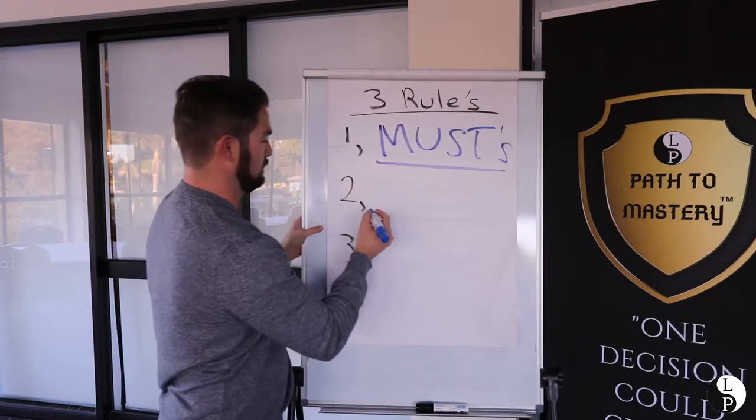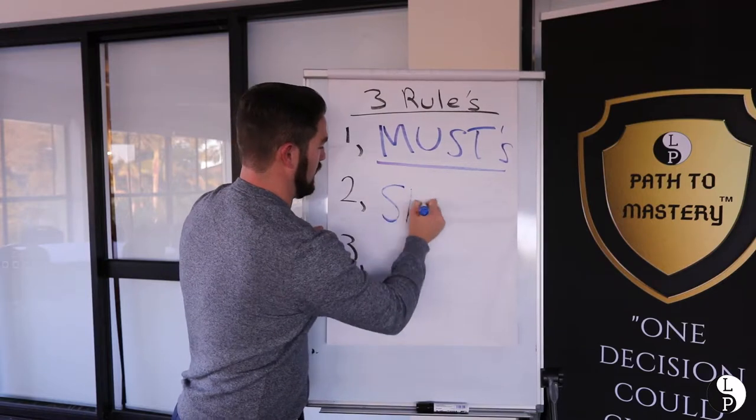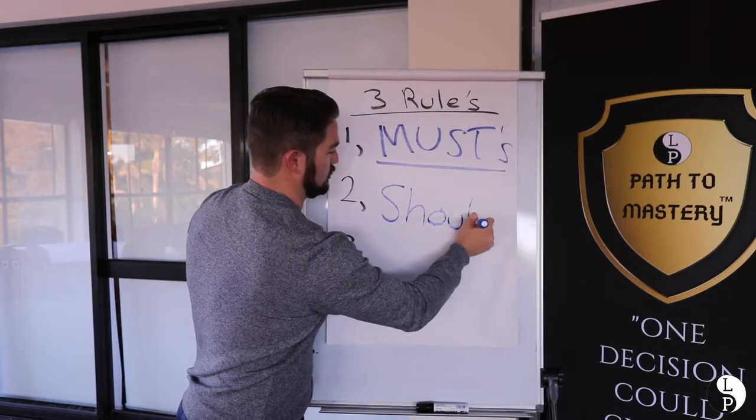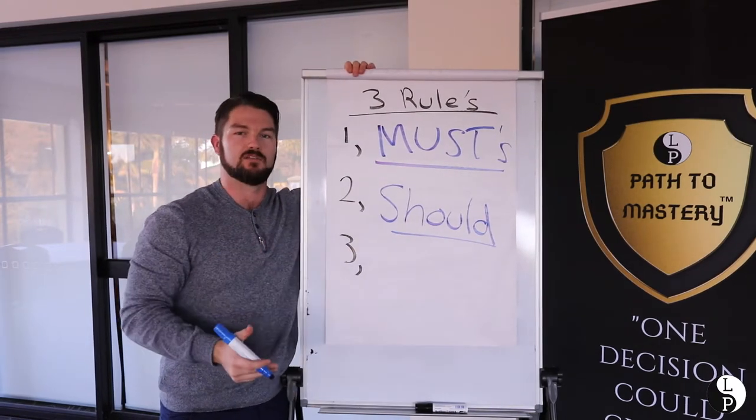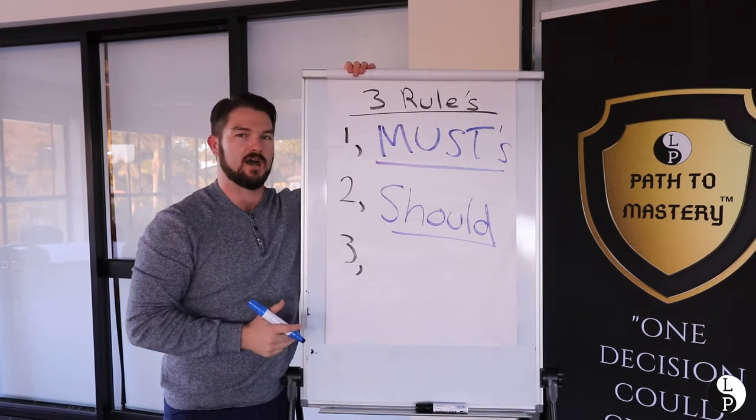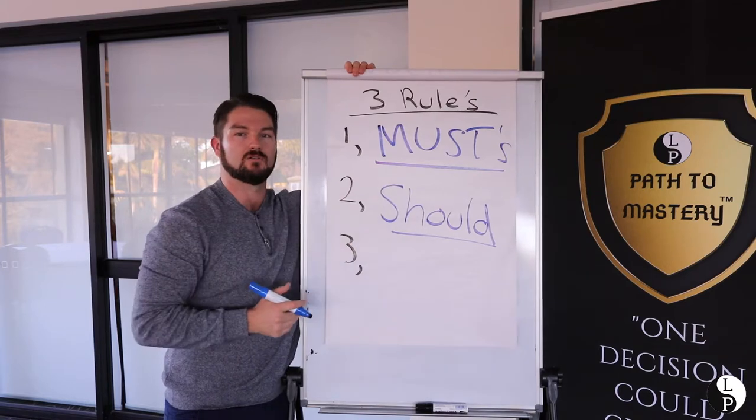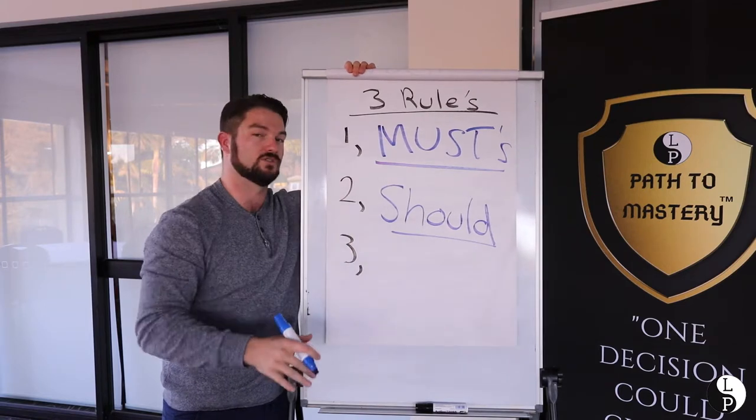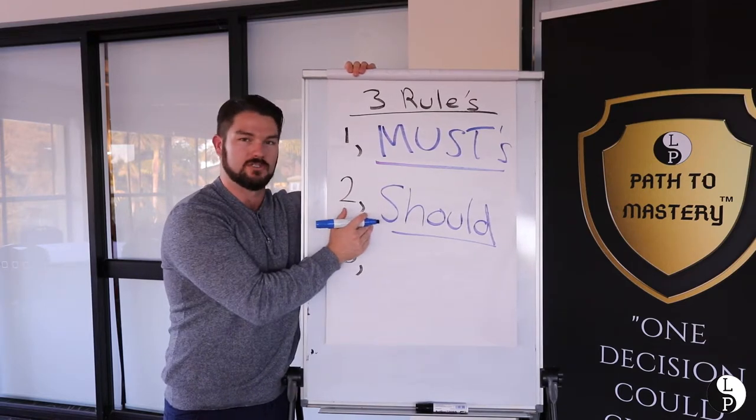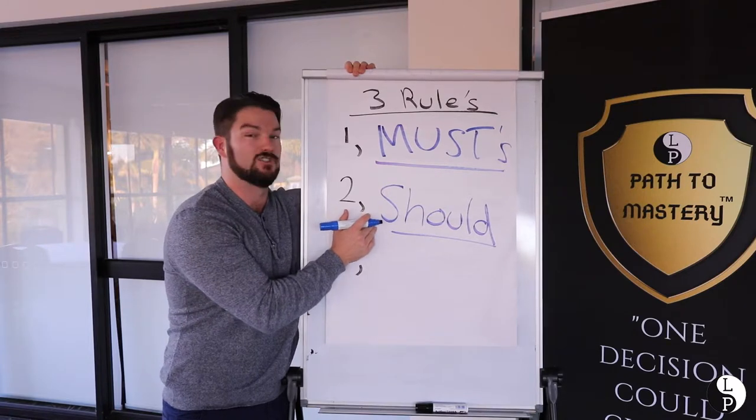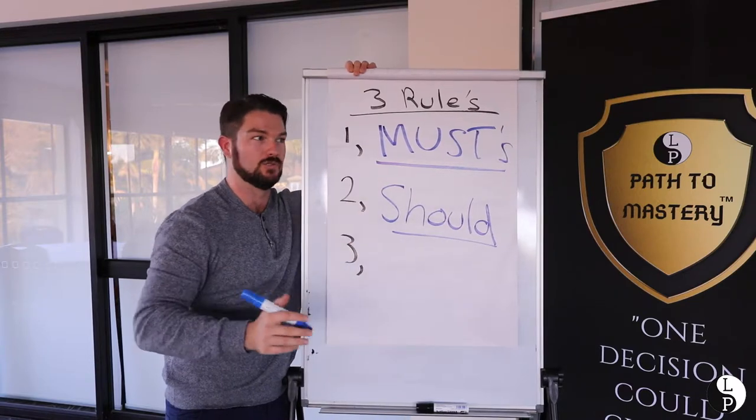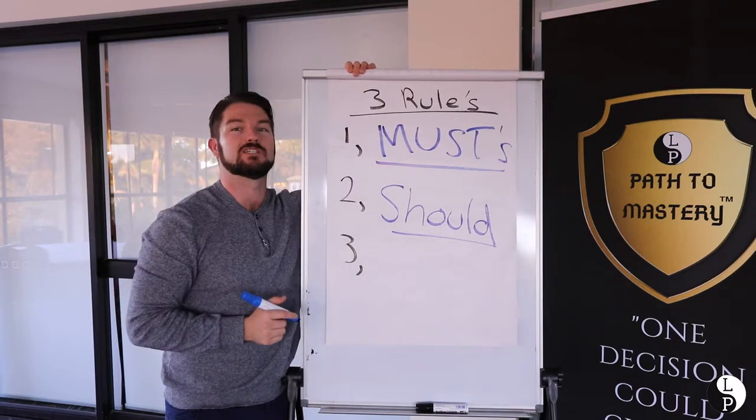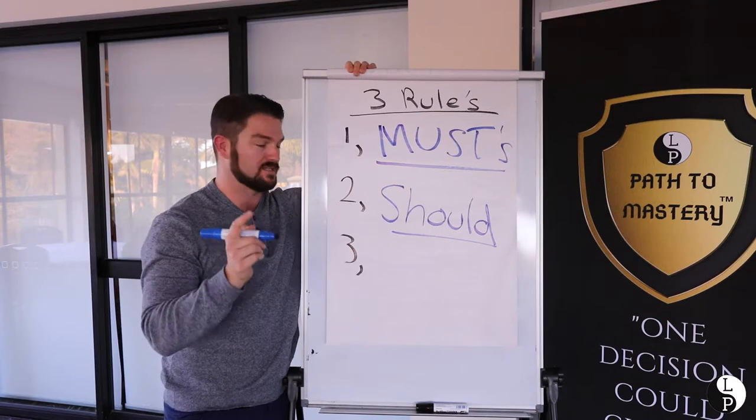The next one is should. What should a perfect partner do? What should an amazing partner do? They're going to give you a big old list of all sorts of different things, but they're only shoulds. What does that mean? That means that if you don't do them, they're probably not going to leave you. But if you do do them, you'll light them up like a Christmas tree. So that's important.